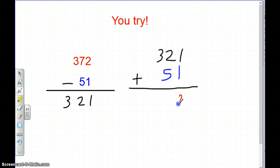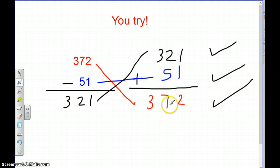1 plus 1 is 2, 2 plus 5 is 7. Bring our 3 down, 372. So we have the same numbers, right? Check, check, check. That means we did it correctly.